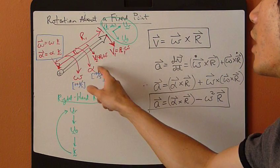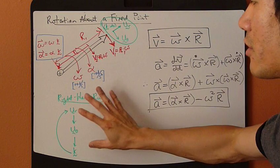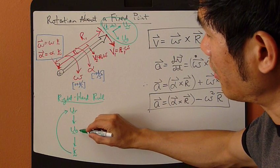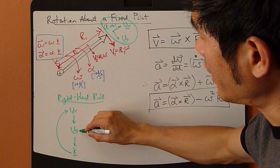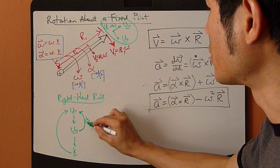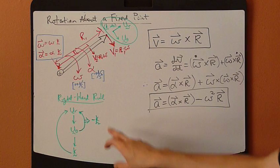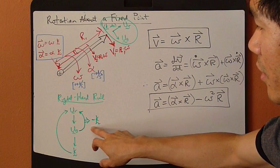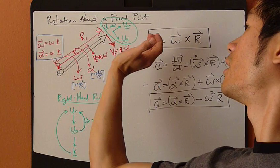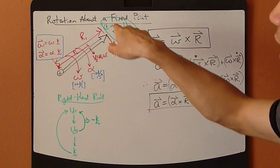The same applies for angular acceleration — it's also in the K direction. So you need to follow this right-hand rule. If you're crossing from theta back to R, you need to reverse the sign of the K direction. So from theta back to R gives you negative K, which is the opposite K direction.